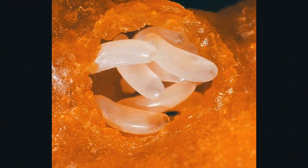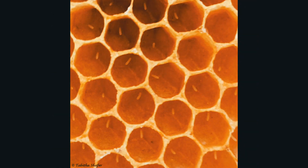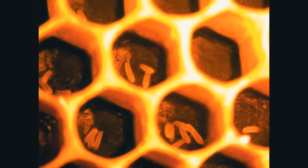Egg stage. The queen bee lays eggs individually in cells of the comb. The eggs are tiny, elongated, and are attached to the cell walls.